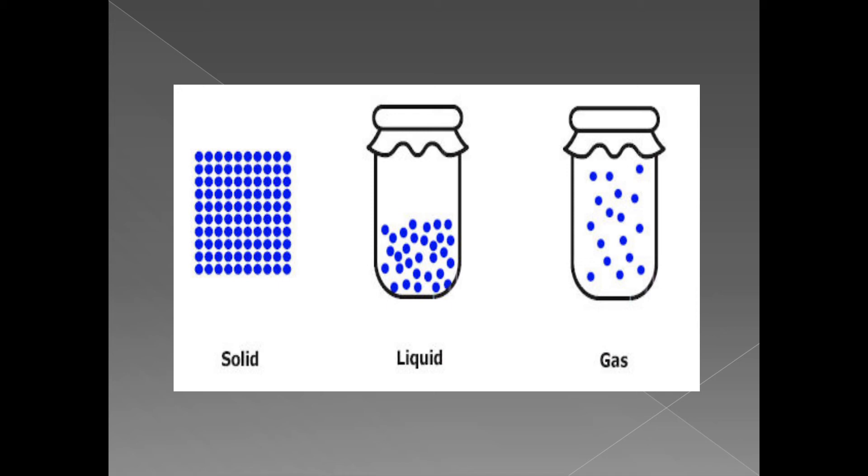Thus we can say that solids have less randomness, liquids have more randomness compared to solids, and gases have maximum randomness.